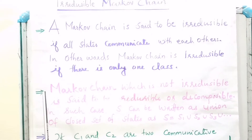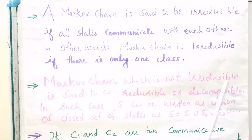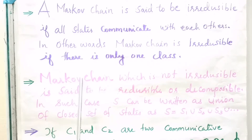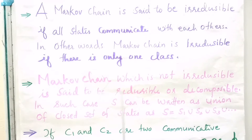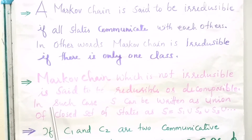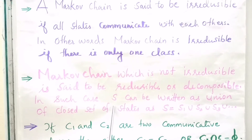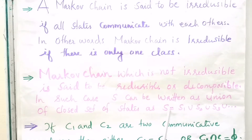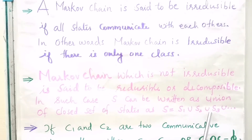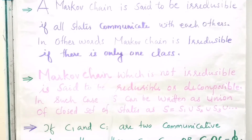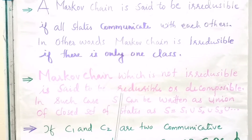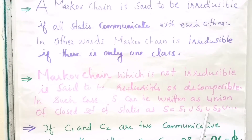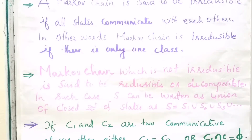A Markov chain which is not irreducible is said to be reducible or decomposable. In such case, the state space S can be written as the union of closed sets of states: S = S1 ∪ S2 ∪ S3 ∪ ... That is, in the case of a reducible chain, S can be written as S1 union S2 union S3, and so on.